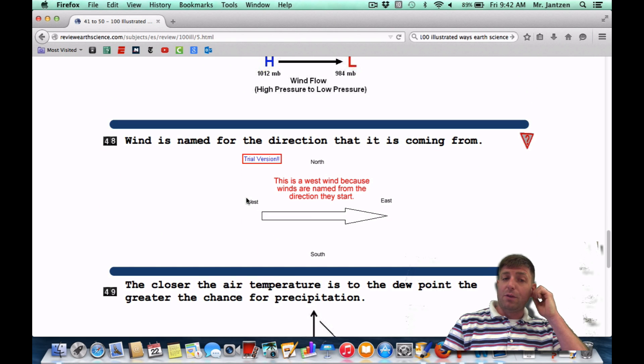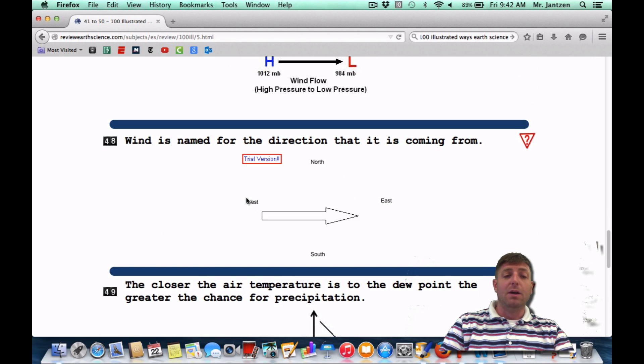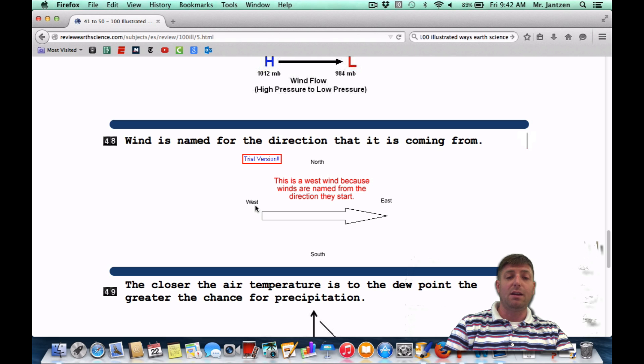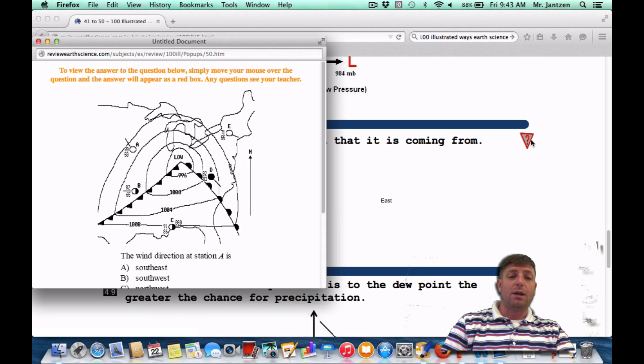Speaking of winds, wind is named for the direction that it is coming from. So if the wind is coming from the west, as indicated here, we call that a westerly. It's coming from the east, an easterly. Nor'easter comes from the northeast. So wherever the wind is coming from, that is what we're naming it for.